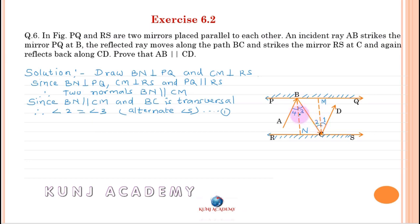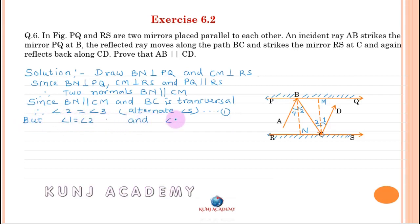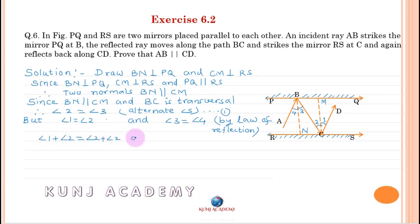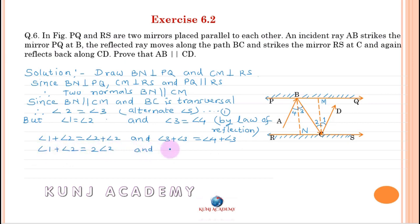So angle 1 equals angle 2 and angle 3 equals angle 4 by law of reflection. Since angle 2 equals angle 3, therefore 2×angle 2 equals 2×angle 3, so angle 1 plus angle 2 equals angle 4 plus angle 3.